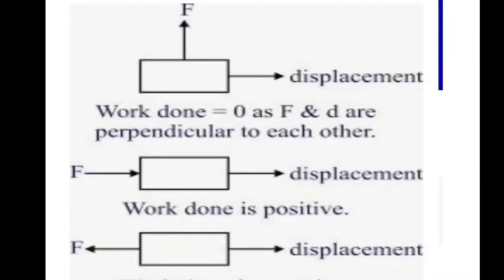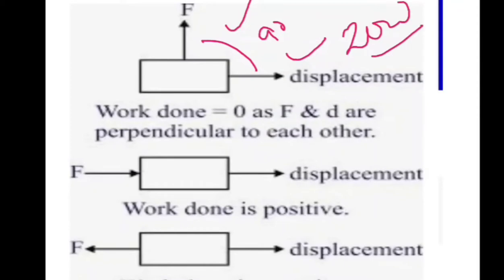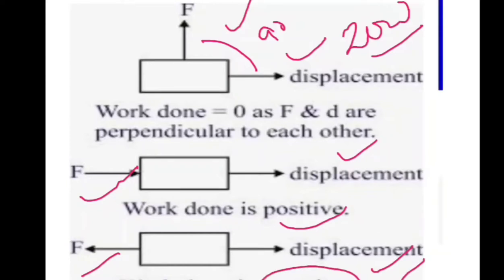Let us identify the type of work done in three cases. In the first case, force and displacement are perpendicular to each other, so work done is zero. In the second case, force and displacement are in the same direction, so work done is positive. In the third case, force acts opposite to the direction of displacement, so work done is negative. So now it is easy to find out whether the work done is positive, negative, or zero.